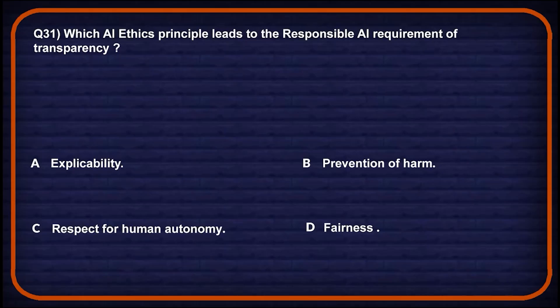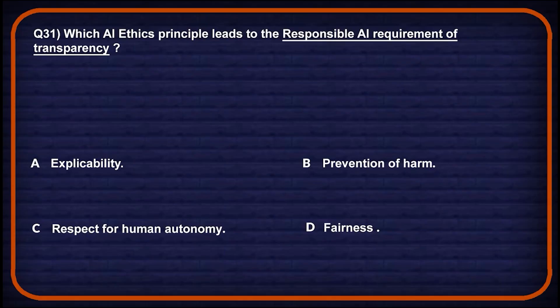Let's move on to question number 31: which AI ethics principle leads the responsible AI requirement for transparency? Option A: explicability supports transparency by making AI decisions understandable and explainable, so this might be a potential answer. Let's keep it.